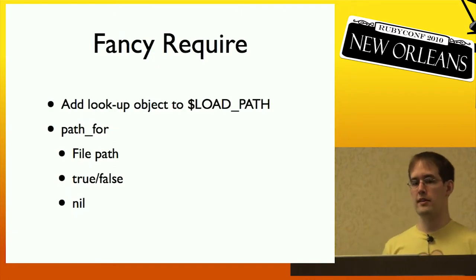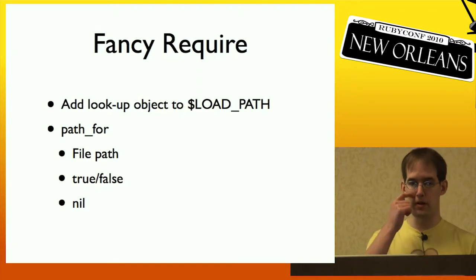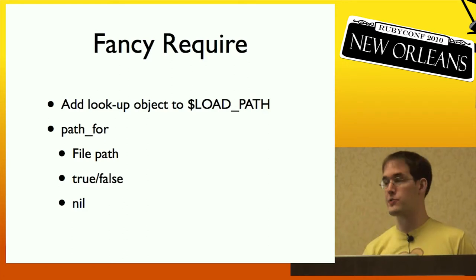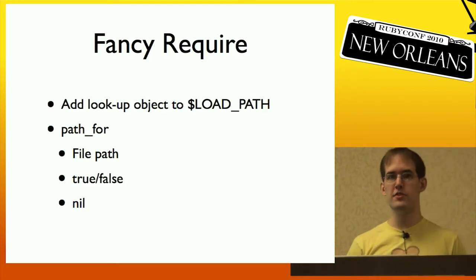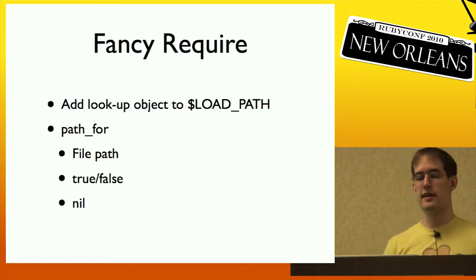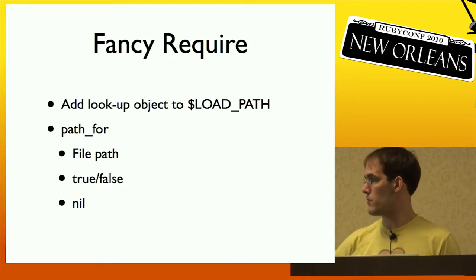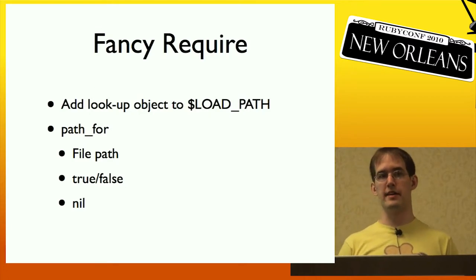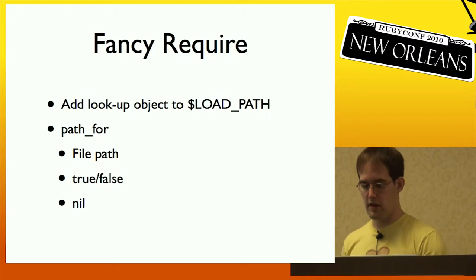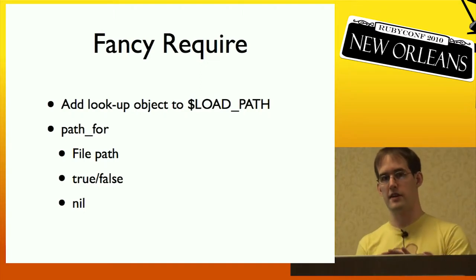Fancy require is a feature I've developed with inspiration from Nobu to add a lookup object to Ruby's load path. RubyGems would add a RubyGems lookup object to the load path, and this would respond to the path_for method. Ruby would pass it the name of a file to be required, and it would respond with one of three things: a file path telling Ruby to load the file normally; true or false to say the load has already been taken care of; or nil to go on to the next item in the load path. With this, the RubyGems custom require could be encapsulated in this lookup object rather than sitting on top of require.